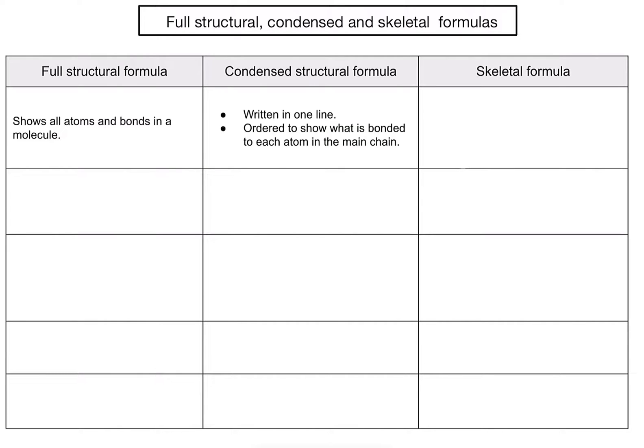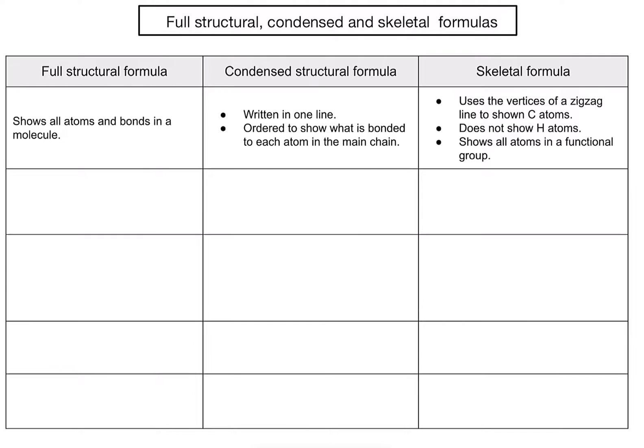For skeletal formulas, there are a few points. We use the vertices of a zigzag line to represent carbon atoms. We don't draw hydrogen atoms, but we can work out how many there are with a bit of reasoning. We do show all atoms if they are in a functional group.